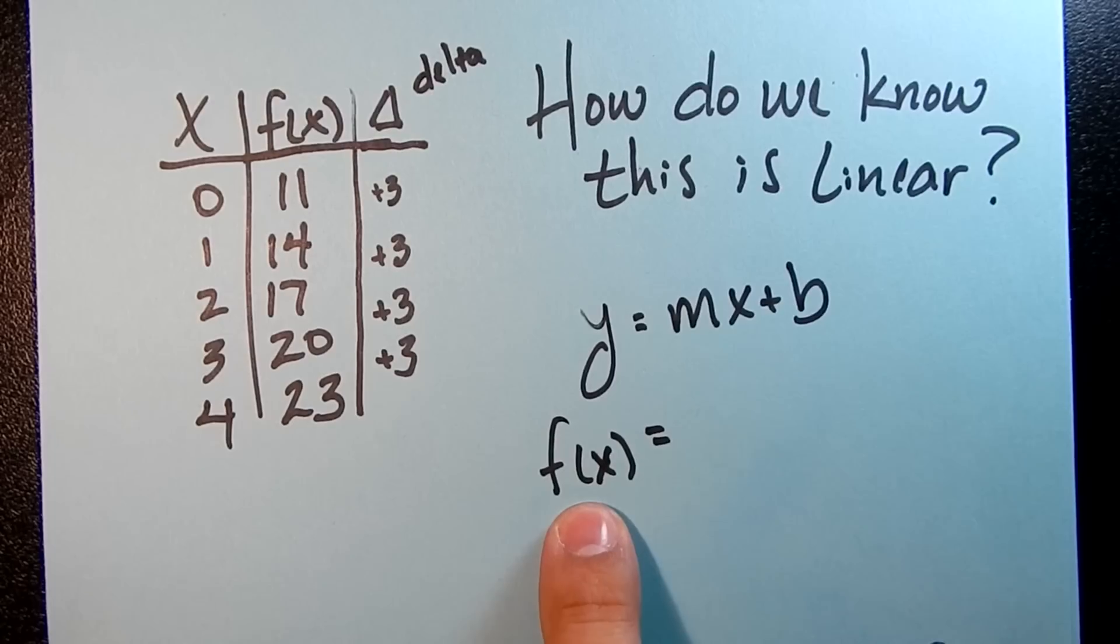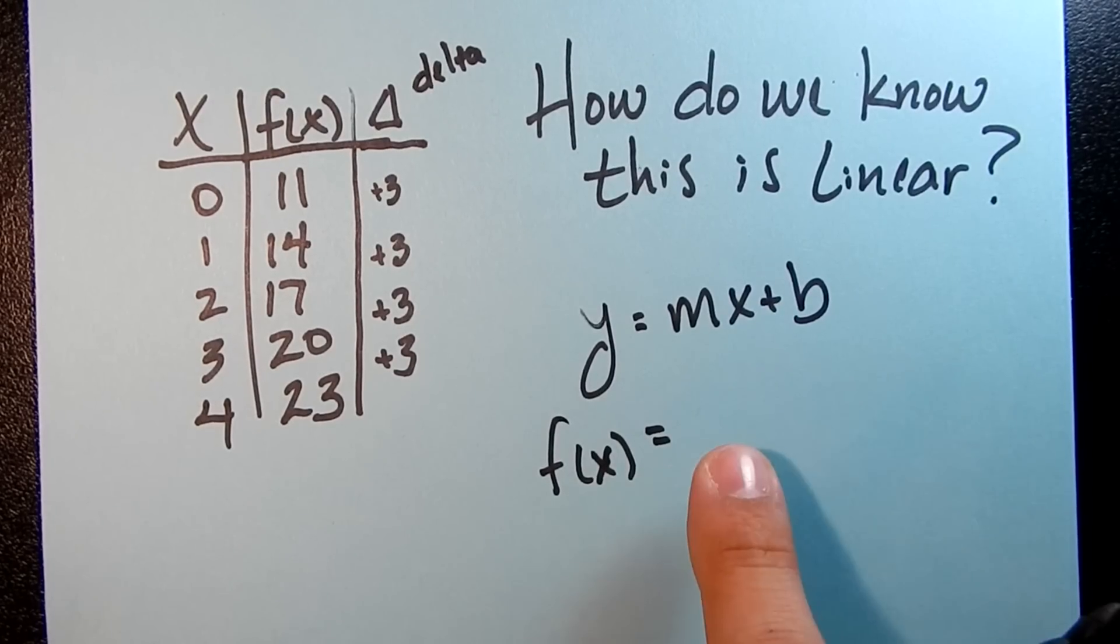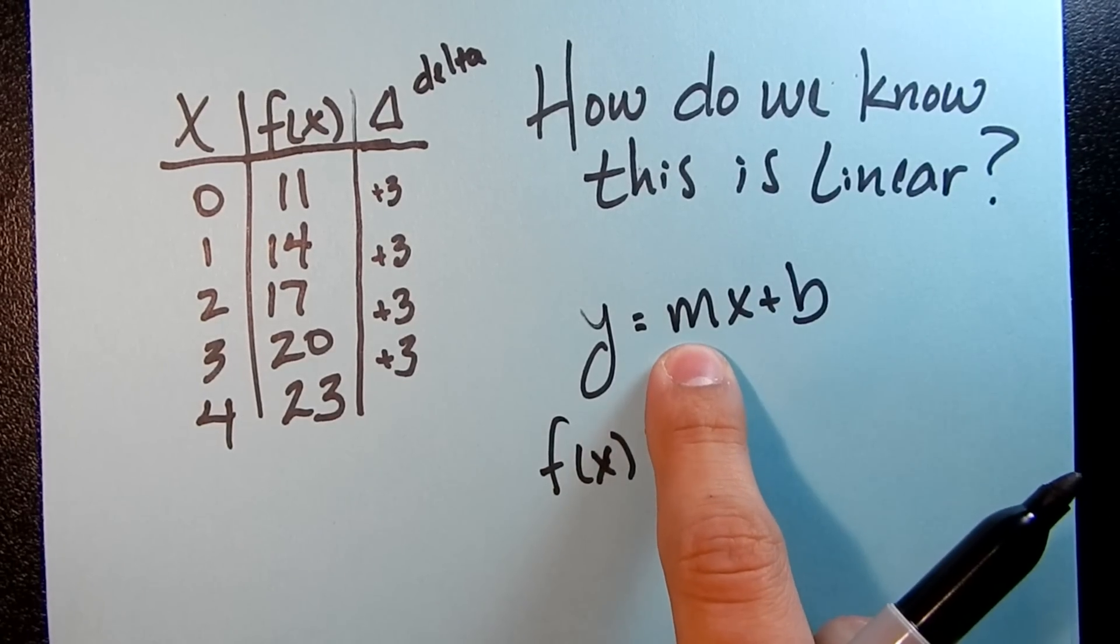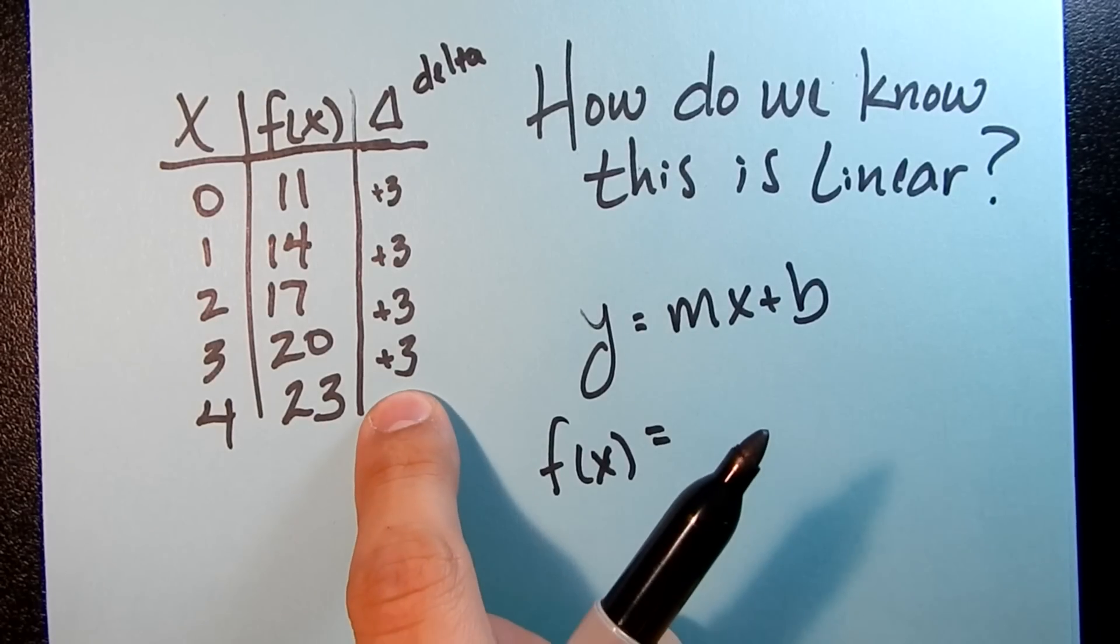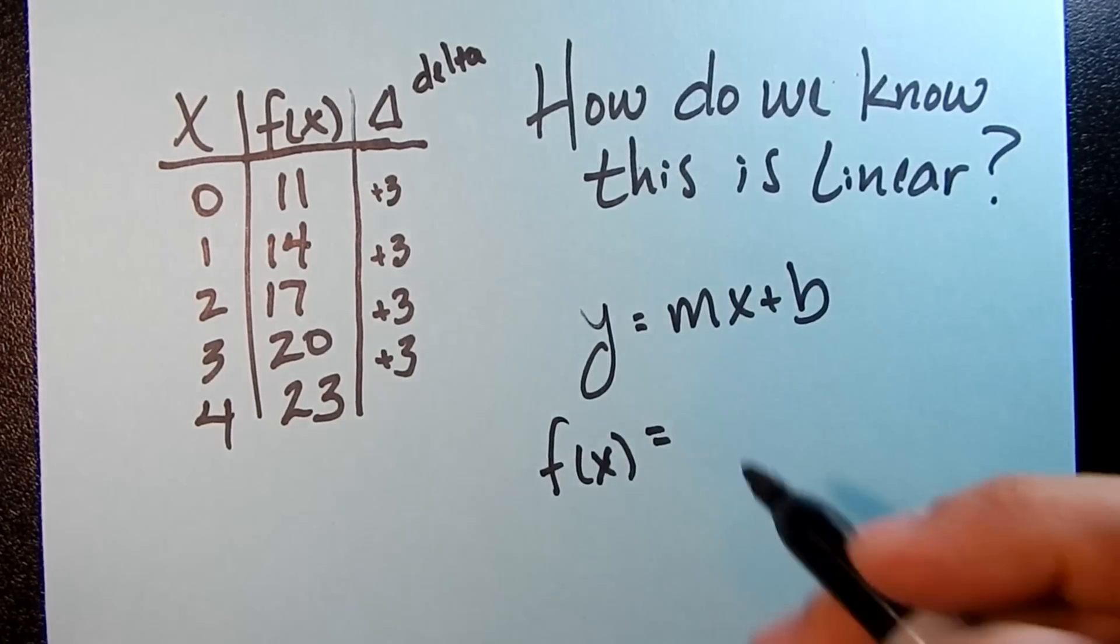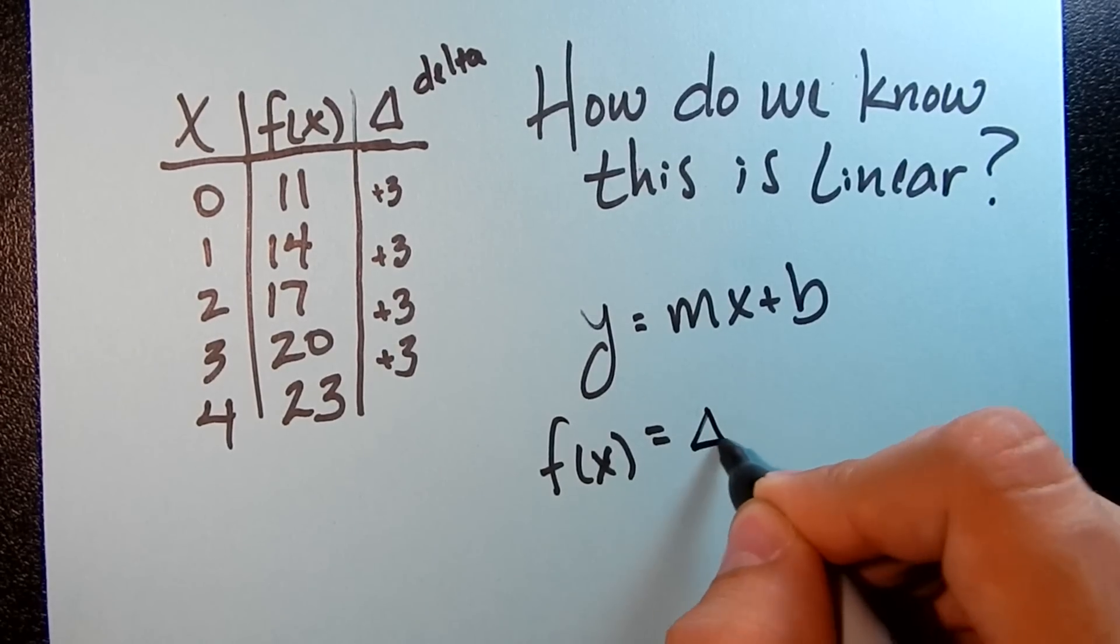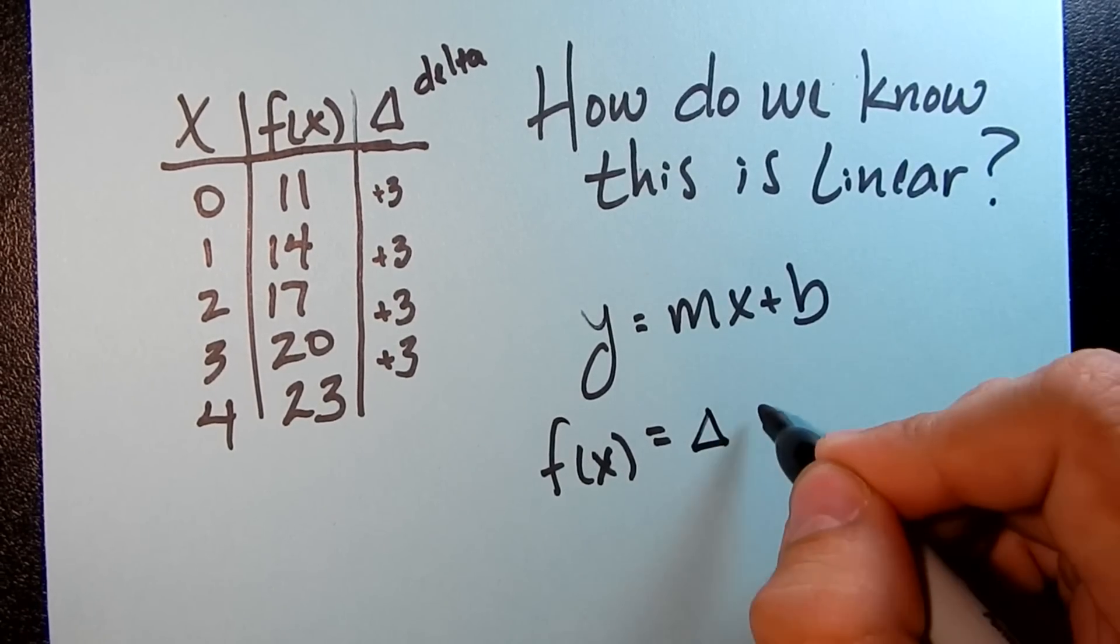Okay. So we've got f(x). And one thing we have to find is m. m is our slope. We actually just discussed this a little bit ago. Your slope is going to be your delta term. So delta from your table is your slope.